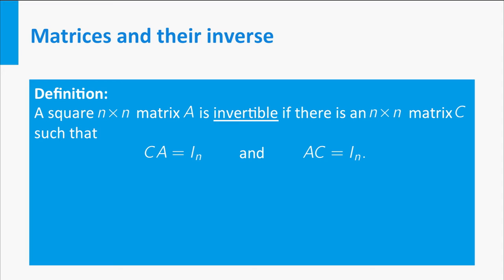For square matrices we take the same approach as for numbers. A square n by n matrix A is called invertible if there is an n by n matrix C, such that C times A equals I_n and A times C equals I_n.